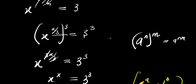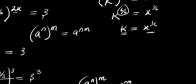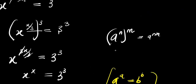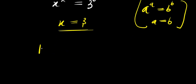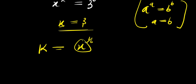Then we can solve for k, making use of the identity k equals x power 1 over 6. So k equals x power 1 over 6, and since x equals 3, we substitute: k equals 3 power 1 over 6. Let's make k the subject — I have k power 6 equals x power 1 over 6, raised to 3 power 6 again.